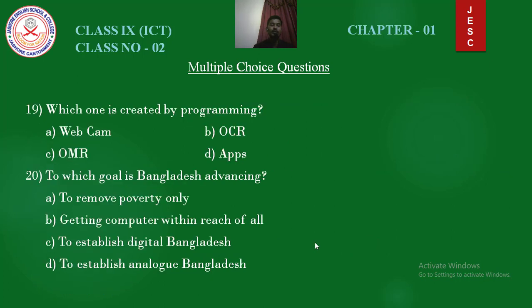Question number 19: Which one is created by programming? Options: webcam, OCR, OMR, apps. Answer is apps. Question number 20: To which goal is Bangladesh advancing? Options: to remove poverty only, getting computer within reach of all, to establish digital Bangladesh, to establish analog Bangladesh. Answer is to establish digital Bangladesh.